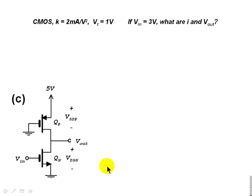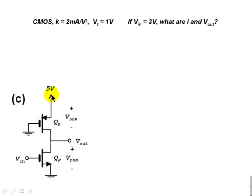For Part C, the input voltage is 3 volts. This creates an asymmetric situation. For the P transistor, the gate is still lower than the source by 5 volts, giving VSG = 5V. For the N transistor, the gate-source voltage is 3 volts. In both cases, the gate-source voltage exceeds VT = 1 volt, so neither transistor is in cut-off. There is current flowing.